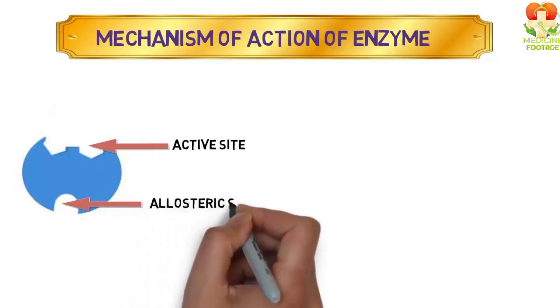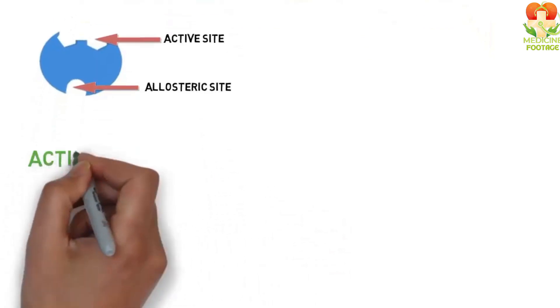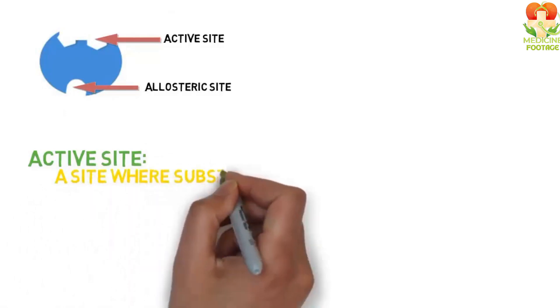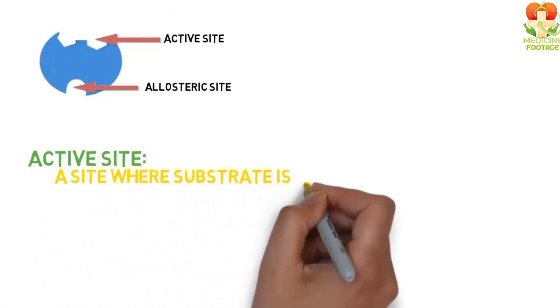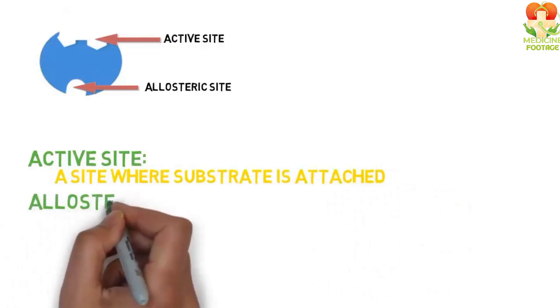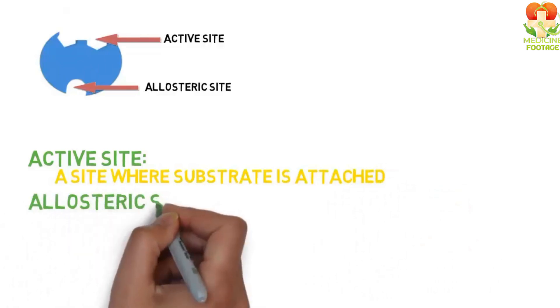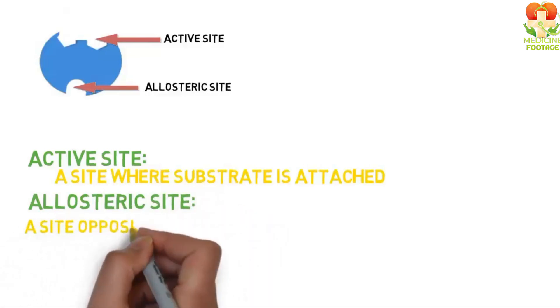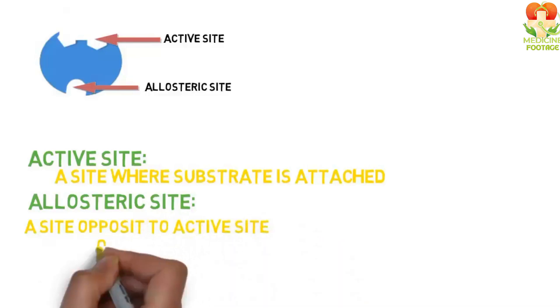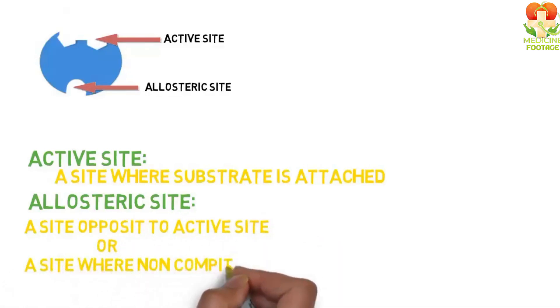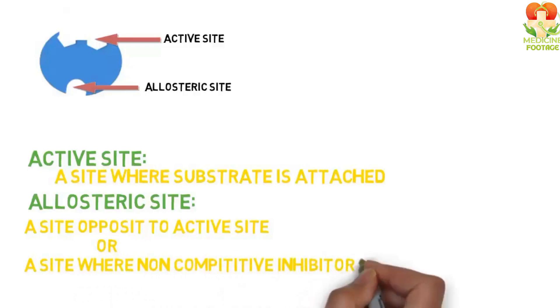Let me define both of these. What is an active site? The active site is where the substrate comes and binds. What is an allosteric site? The allosteric site is located opposite the active site. We can also say that this is the site where a non-competitive inhibitor attaches.